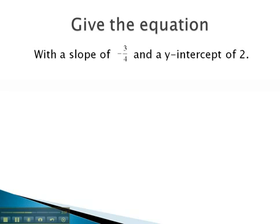In this problem, we are told that the slope is negative 3 fourths. As you recall, we represent the slope with the letter m. We're also told that the y-intercept is 2. We will always use the letter b to represent the y-intercept. We also know the equation, y equals mx plus b, will represent any line.